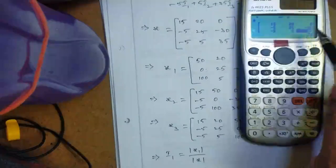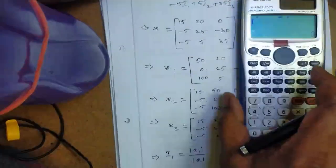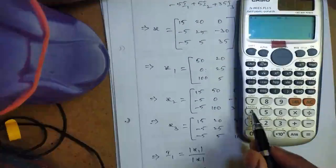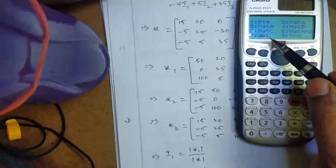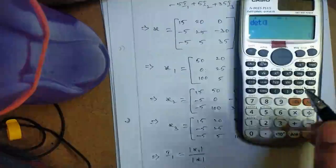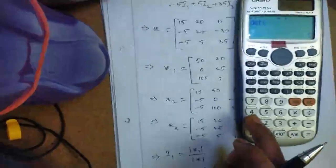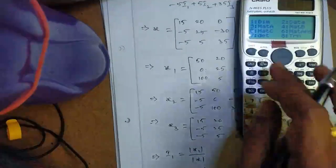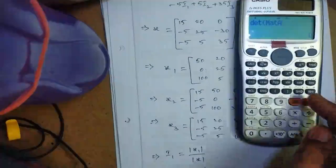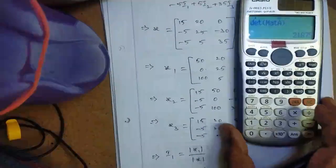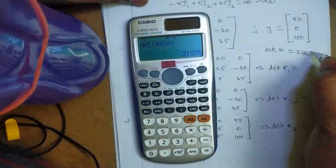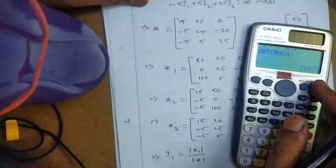We have to find the determinant. Press shift, then press matrix (which is on top of number 4), press 4. Select option 7 for determinant. Press 7, then again press shift and matrix 4. Select matrix A (option 3), close bracket, press equal. The determinant of matrix X is 21875.